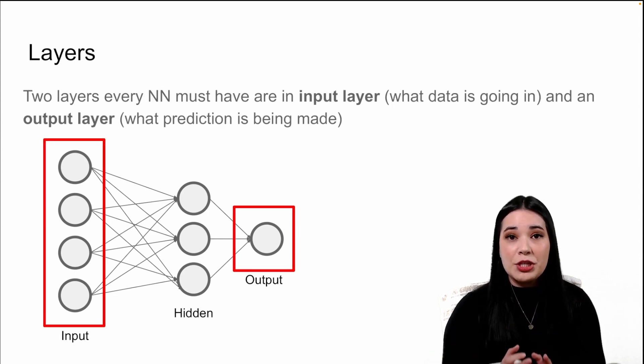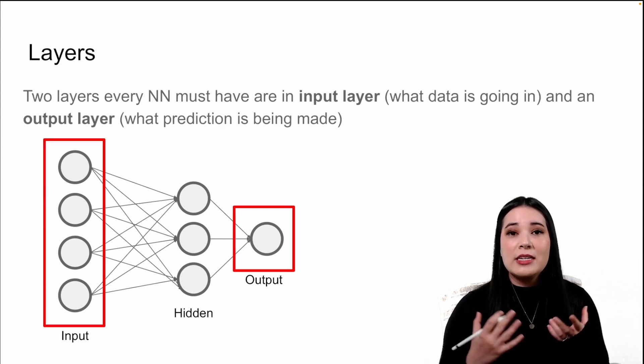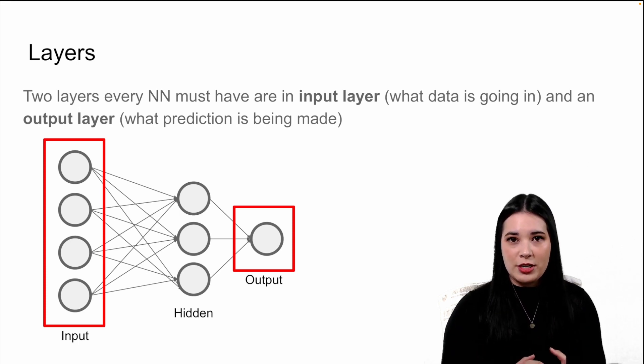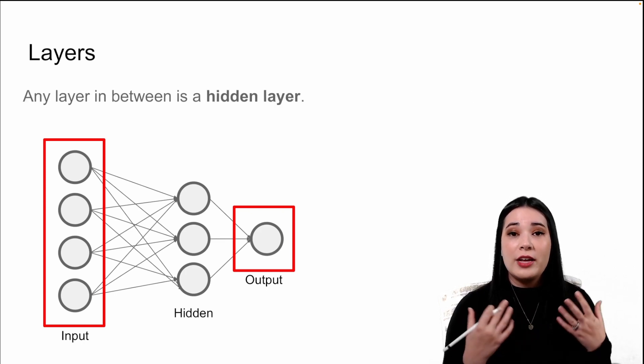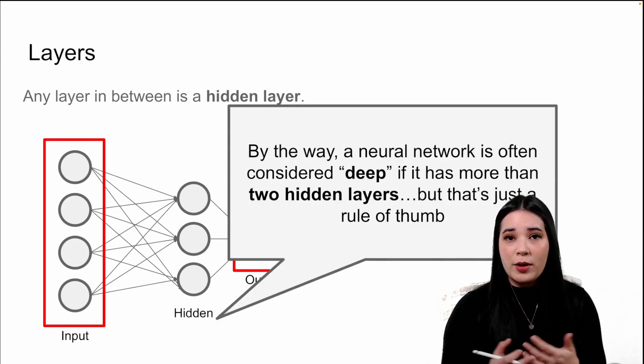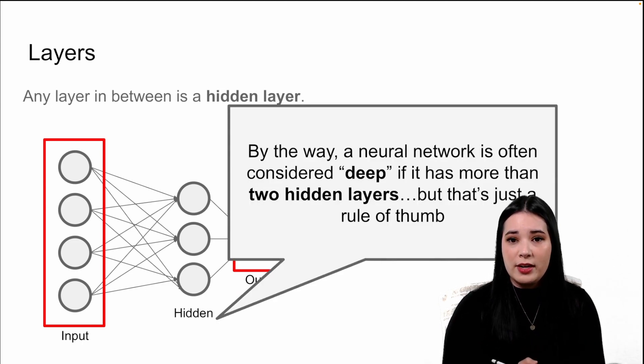Every neural network needs to have at least two layers. The first is an input layer. The input layer determines what data is going into the network. Neural networks also have to have an output layer. The output layer is where our neural network is making a prediction. Anything between the input and output layer is called a hidden layer.